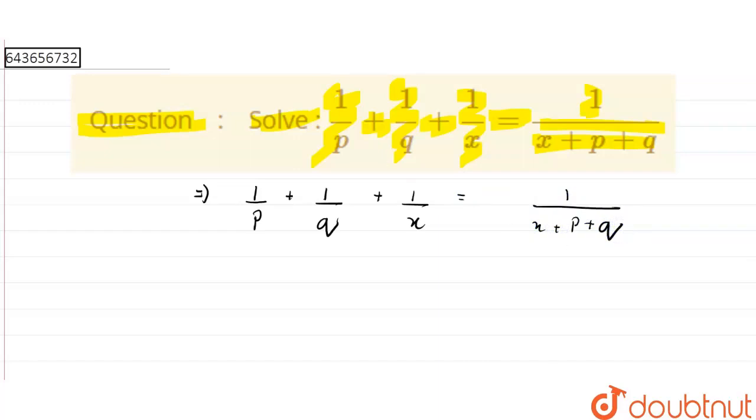What we will do is take this 1/x to that side, so it will be 1/p + 1/q equals 1/(x + p + q) minus 1/x.